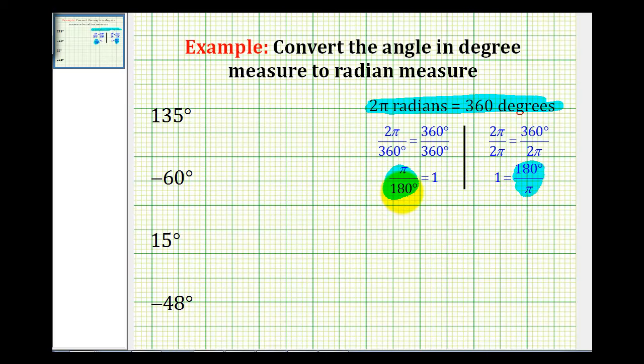To help determine which unit fraction to use to do the conversion, it helps to think of 135 degrees as a fraction. So we'll put it over one. And we know if we want to convert degrees to radians, we need to simplify out the degree measure. And we can do that if the degree measure is in the denominator. So we'll use this unit fraction to convert from degrees to radians, and we'll use this unit fraction in another video to convert from radians to degrees.